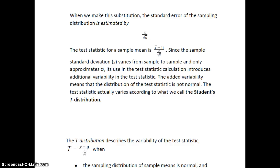Now, the test statistic, which we used to call a z-score, well, it's not going to be a z-score anymore. We'll talk about that in a second. The test statistic for a sample mean is x-bar, which is the sample mean, minus μ, which is the population mean, divided by s over the square root of n.